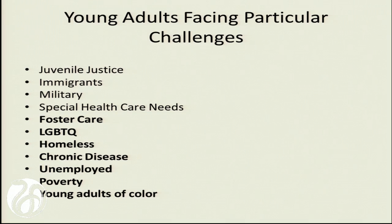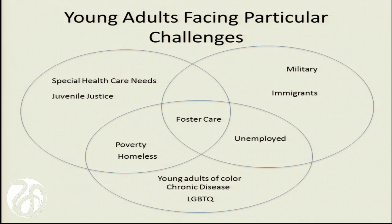There are many different young adults facing particular challenges, and I've listed only a few. Many of you will be talking about these individuals throughout the two days of our meeting. I want us to understand that many of these challenges are multifactorial, represented by interlocking circles. You could have a person who graduated out of foster care who is unemployed, poverty-stricken, homeless, and with a chronic disease — many young people are struggling with multiple challenges simultaneously.